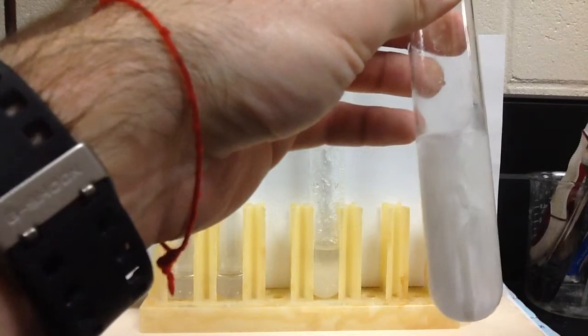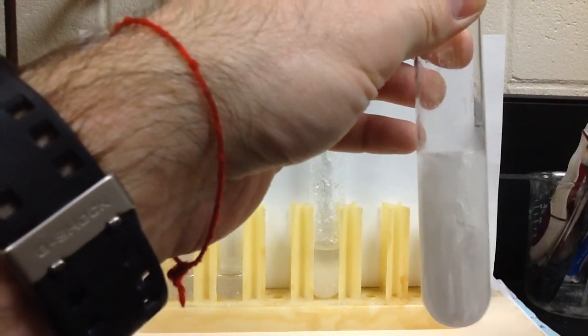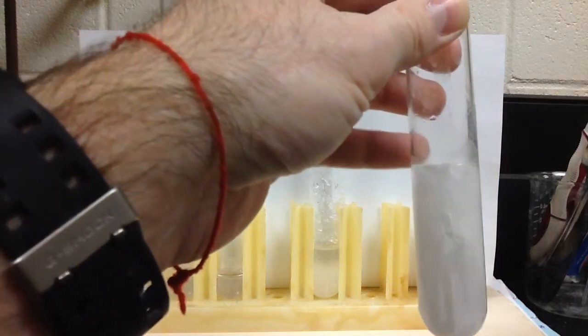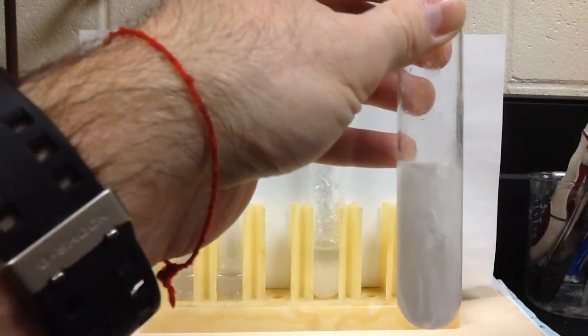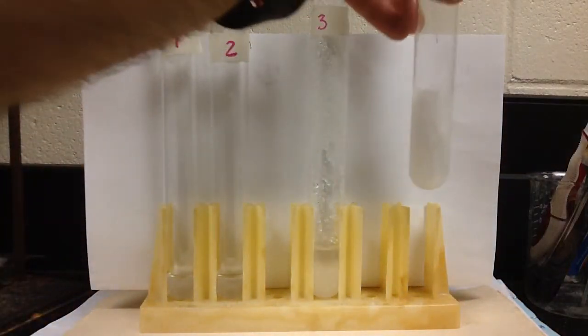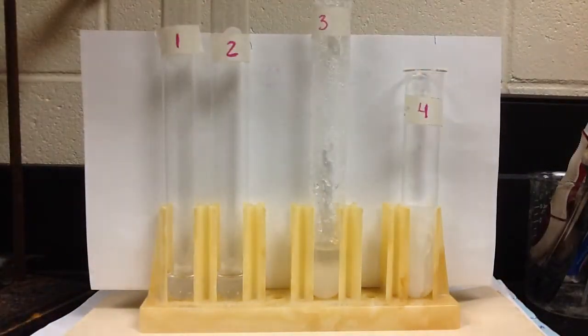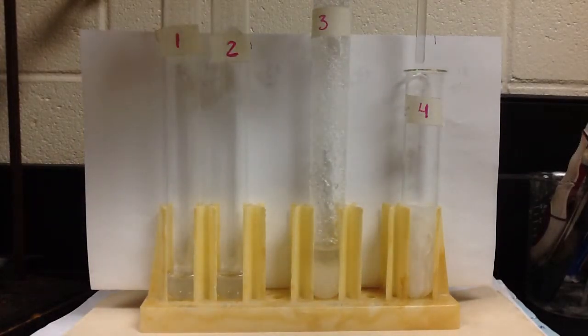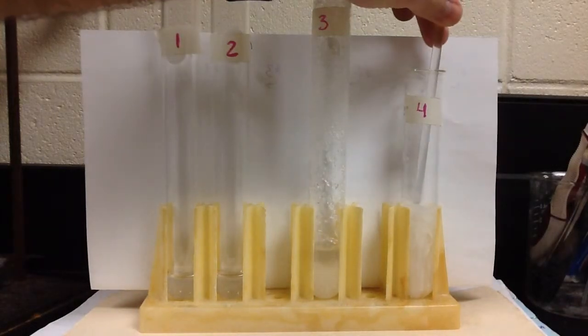And so, at this point, we're kind of thinking, maybe we formed a solid, and what we can do to kind of prove that is, we could take a stirring rod or a rubber policeman and kind of push this around, which I'll do here in a second. And if we actually made a solid, some people say we made ice...